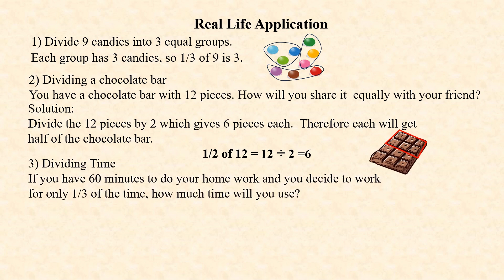Third question: dividing time. You have 60 minutes to do your homework and you decide to work for only one third of the time. How much time will you use? One third of 60 is the same as 60 ÷ 3, which equals 20 minutes.